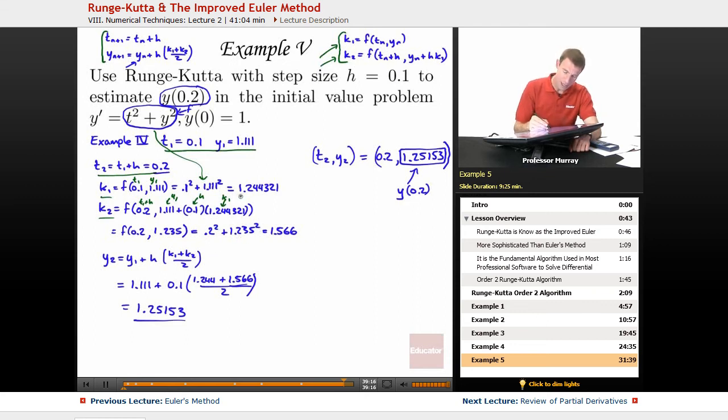I calculate out those decimals and I get k1 and k2. And then I drop those in the formula for y2, drop those in right there. Multiply by h is 0.1, and I still have my y1. So there's y1, there's h. Remember, I'm using this formula right here to figure out y2. Drop in all those decimals, and I just simplified those decimals on my calculator. I didn't think there's any reason to do that on the screen. So we get 1.25153.